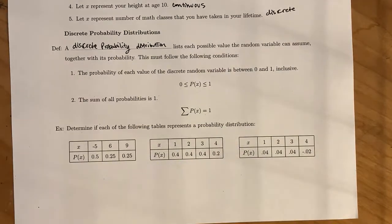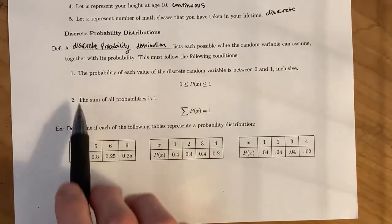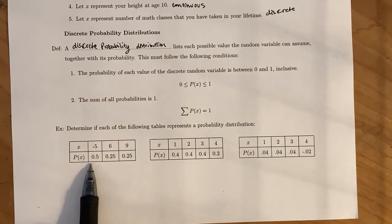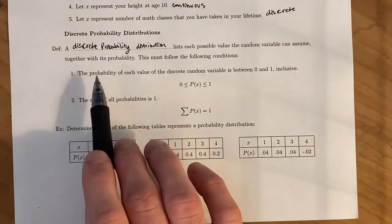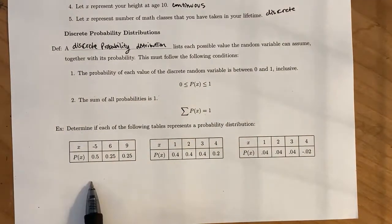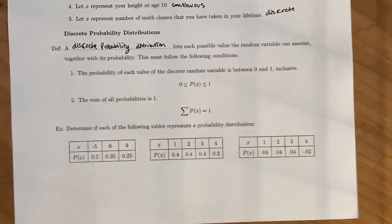So for these three tables down here, let's determine if each of these represent a probability distribution. So we're going to check each of these conditions for each table. And if a table works for both of them, it's a probability distribution. If it doesn't work for one of these, then it's not.